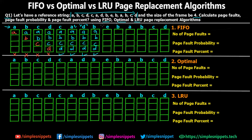Now a page fault situation occurs: one page has to go out and page E has to be loaded. The CPU is wanting page E, so one of A, B, C, or D has to be removed. According to FIFO, the page that came in first must be removed. Looking from step one, A was the page loaded first, so A has to be removed. Instead of A, I'm writing E, and B, C, D remain as is. Since A was removed and E was brought from secondary memory, this is a page fault.